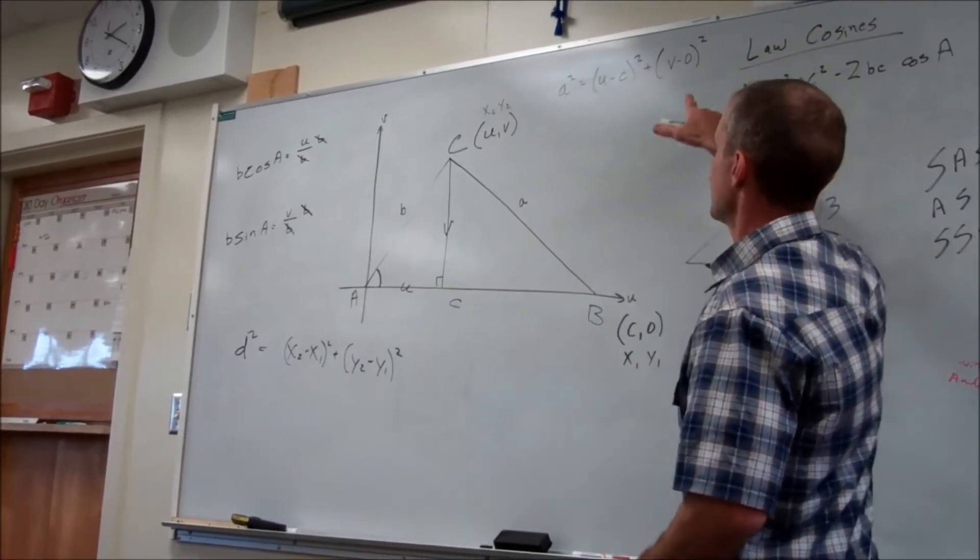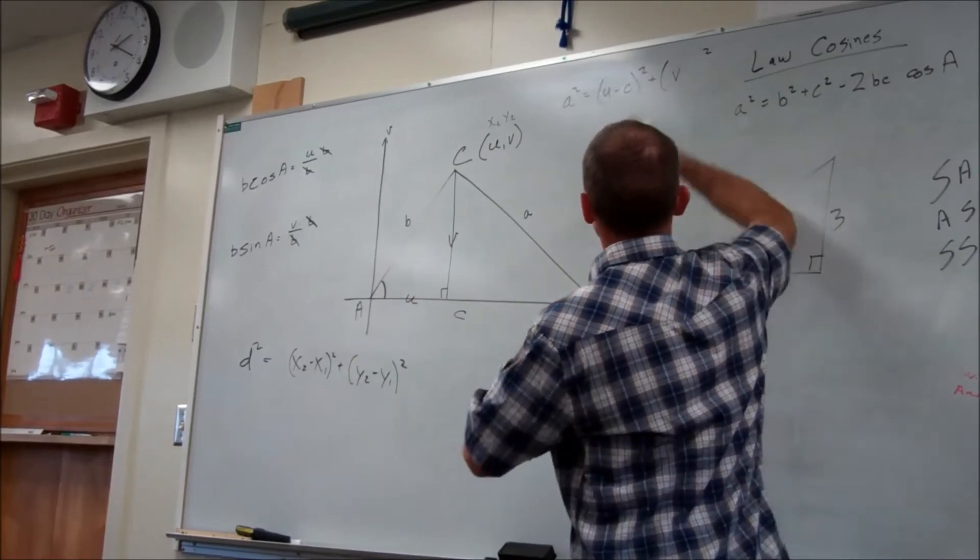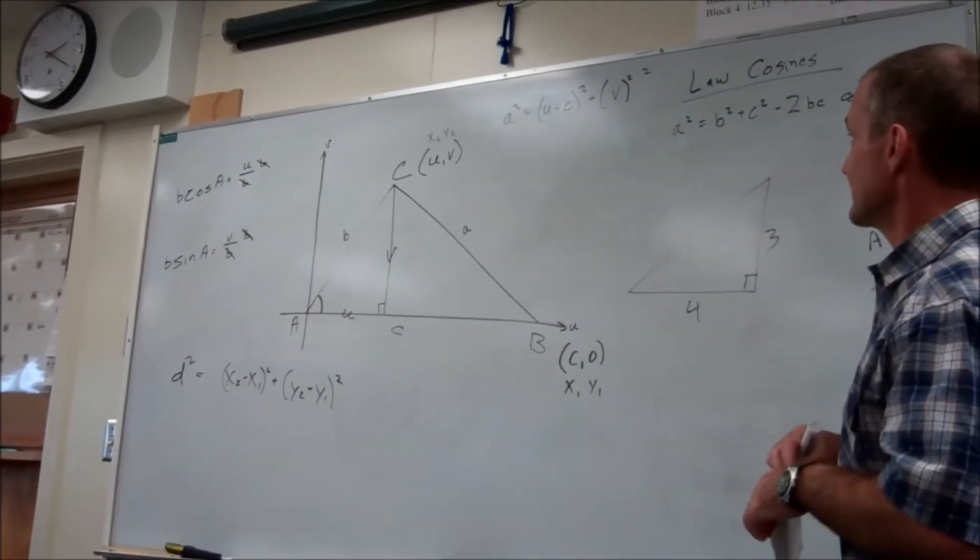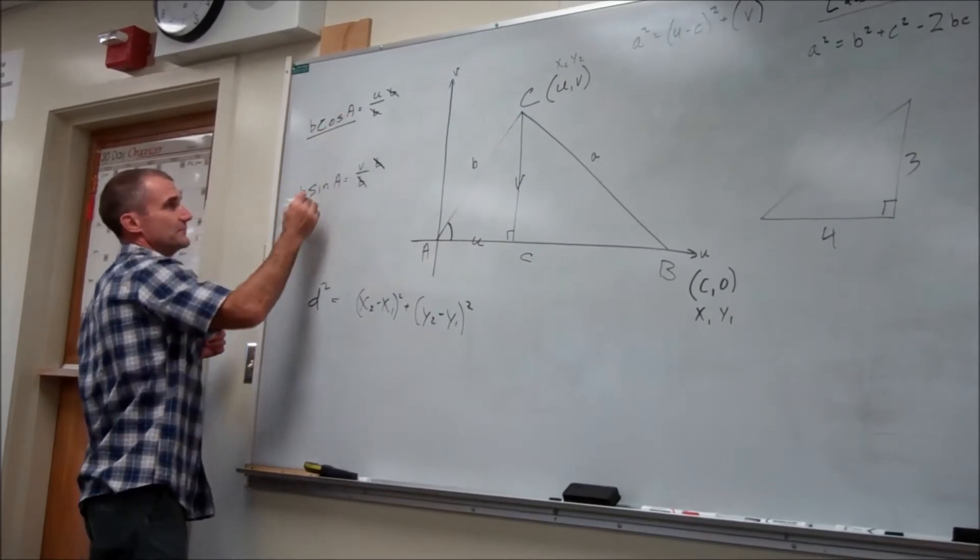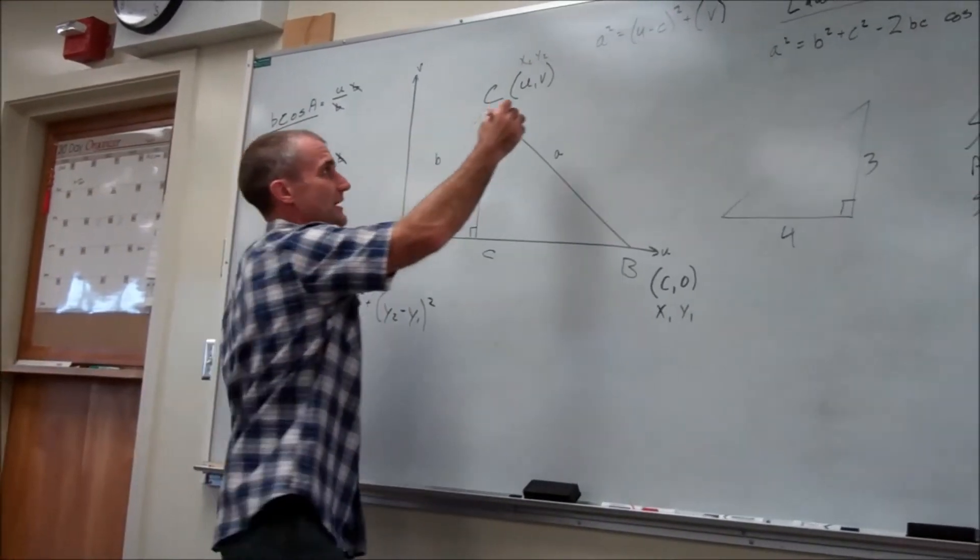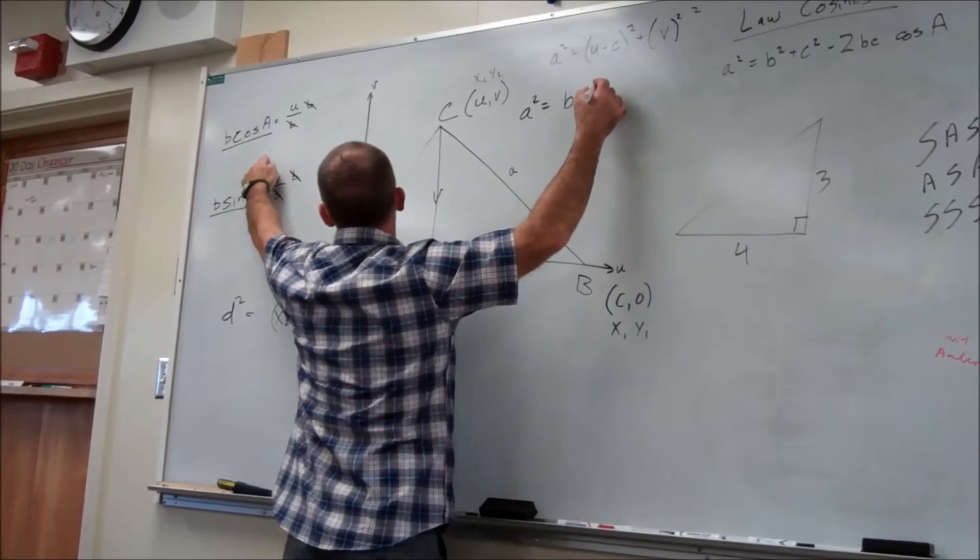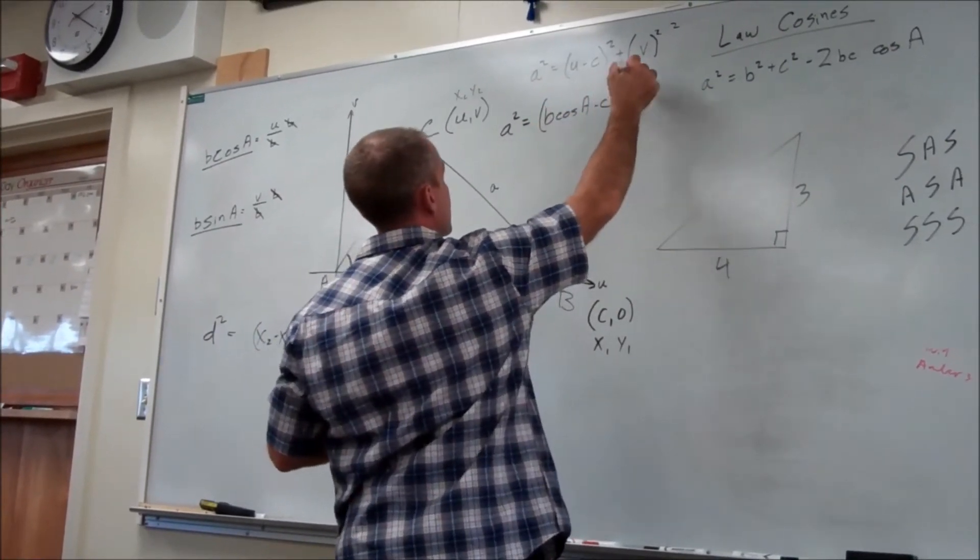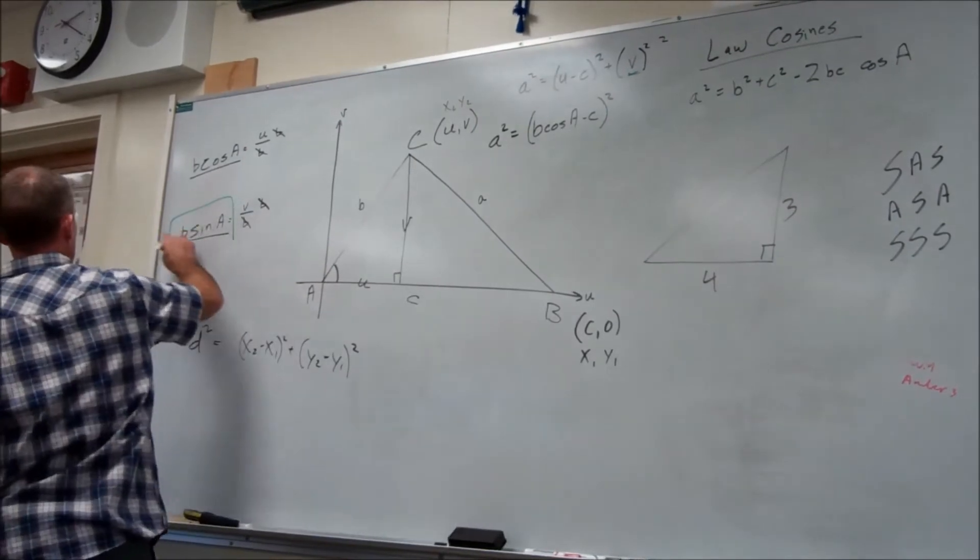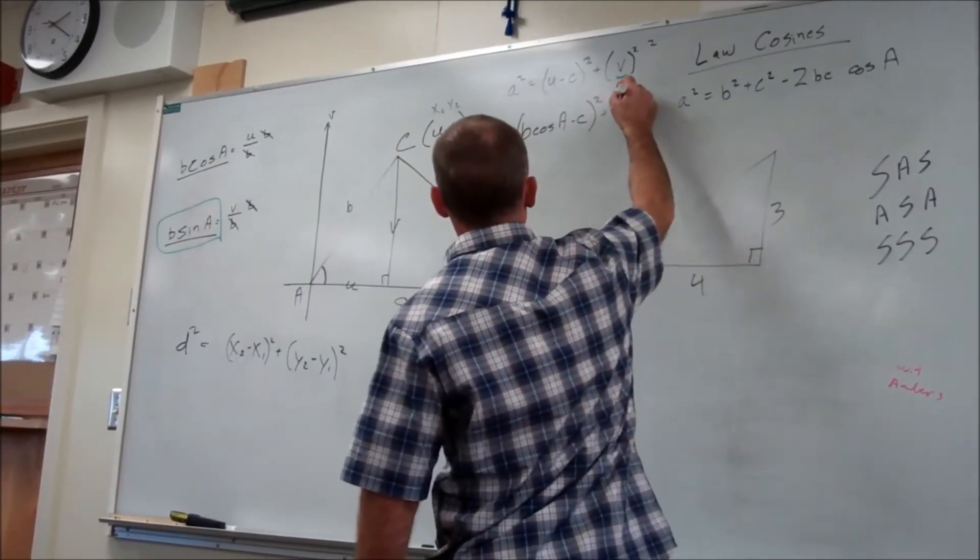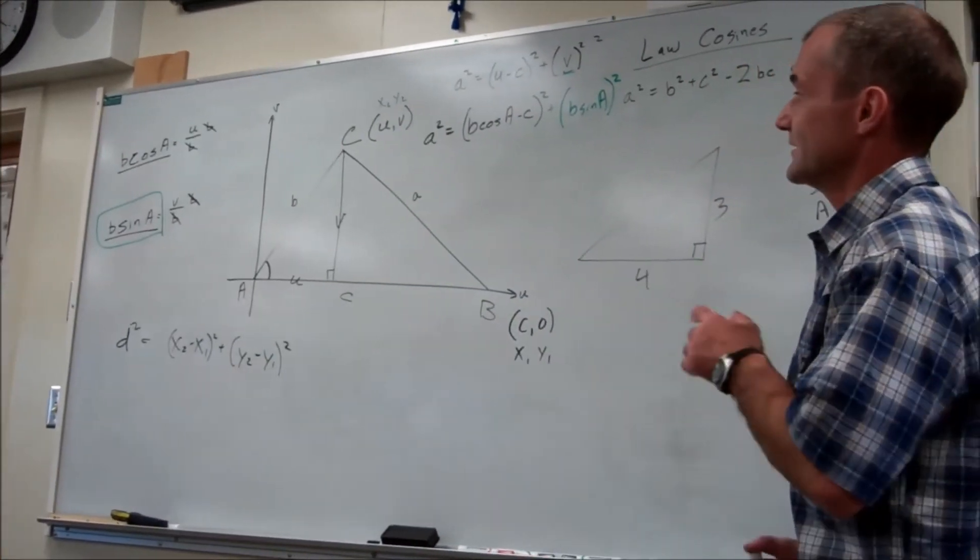And then v minus zero is just v, so I'm going to erase that zero here. So now I just have v squared. And then, now, going back to this, my right triangle trig here, I know that u is equal to b cosine of a, and v is equal to b sine of a. So I have here a squared equals u, which I know is b cosine of a, minus c, quantity squared. And then this v right here, this v we said is b sine of a. So this is plus b sine of a squared. So I replace u and v in terms of sine and cosine.